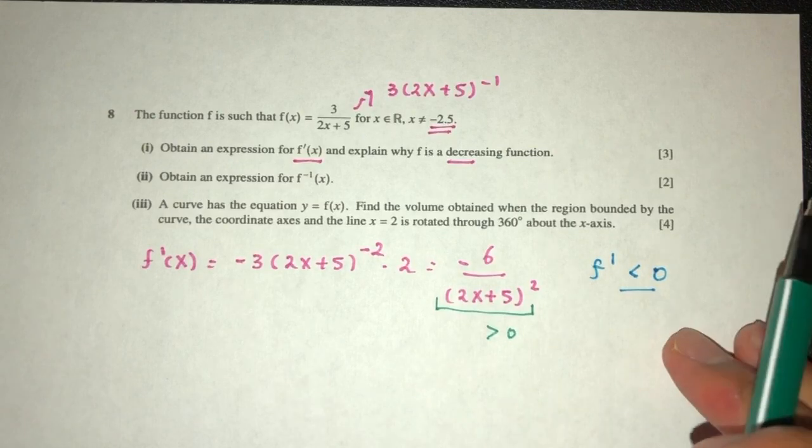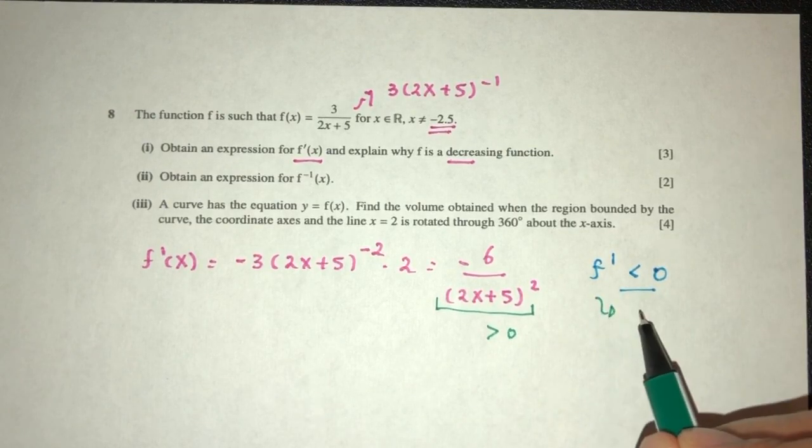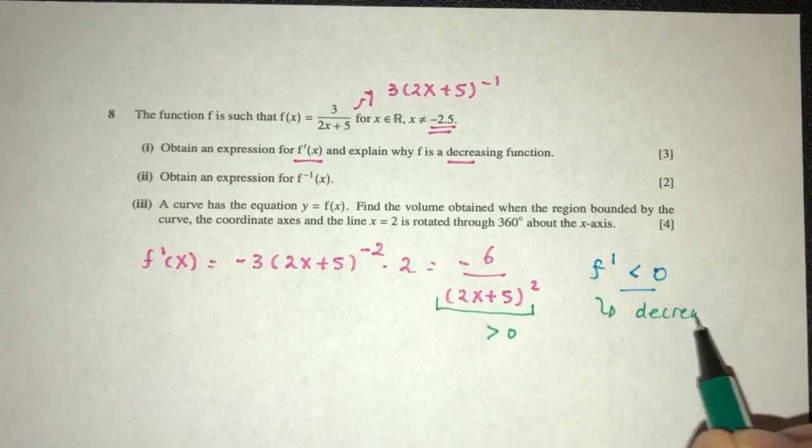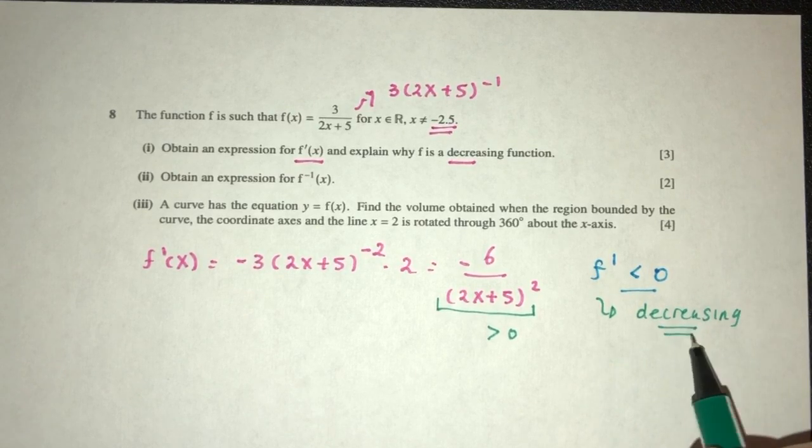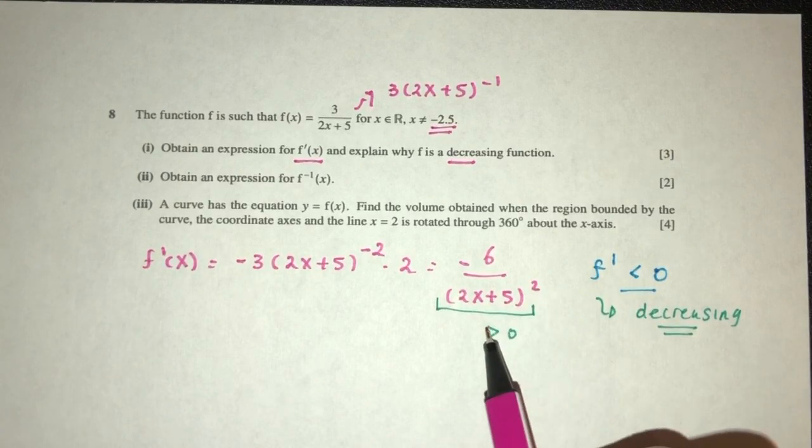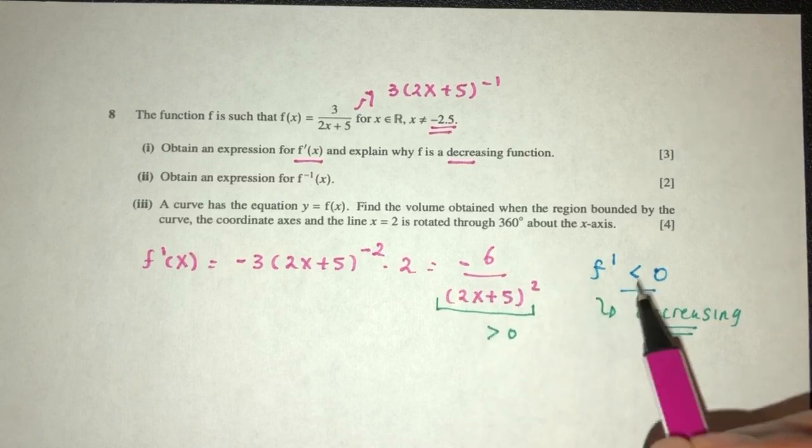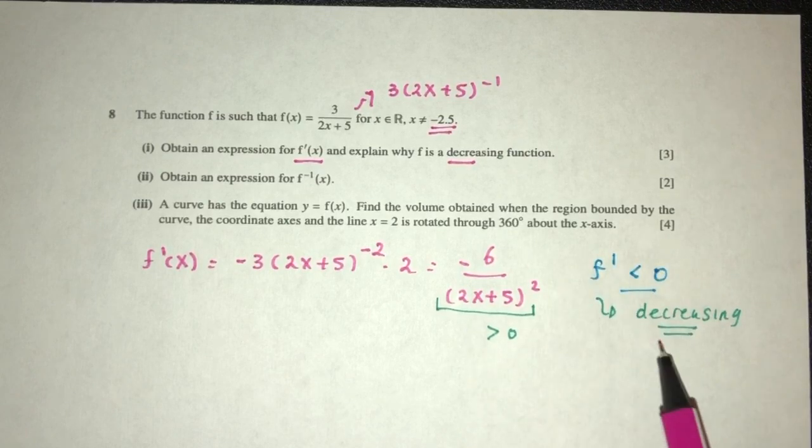So because of that, it will always be a decreasing function. I hope that makes sense, because again, we understand this. When you square something, it will always be more than 0. Negative value divided by positive value, you will always get a negative value. That's why we have this, and this shows it is decreasing.